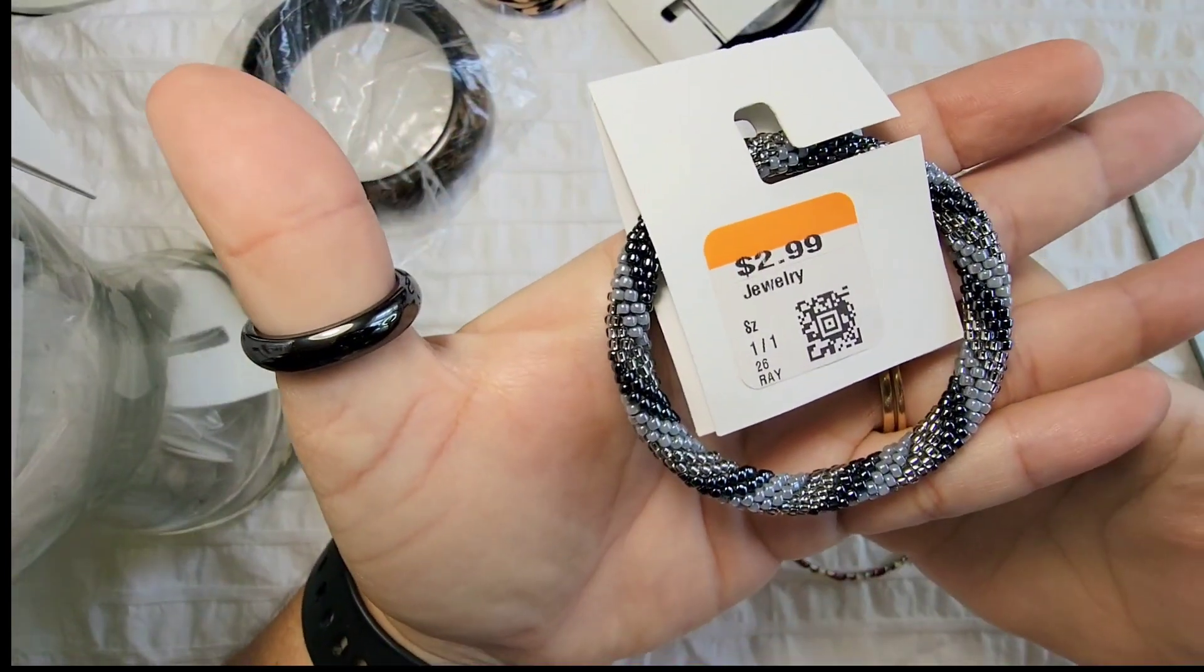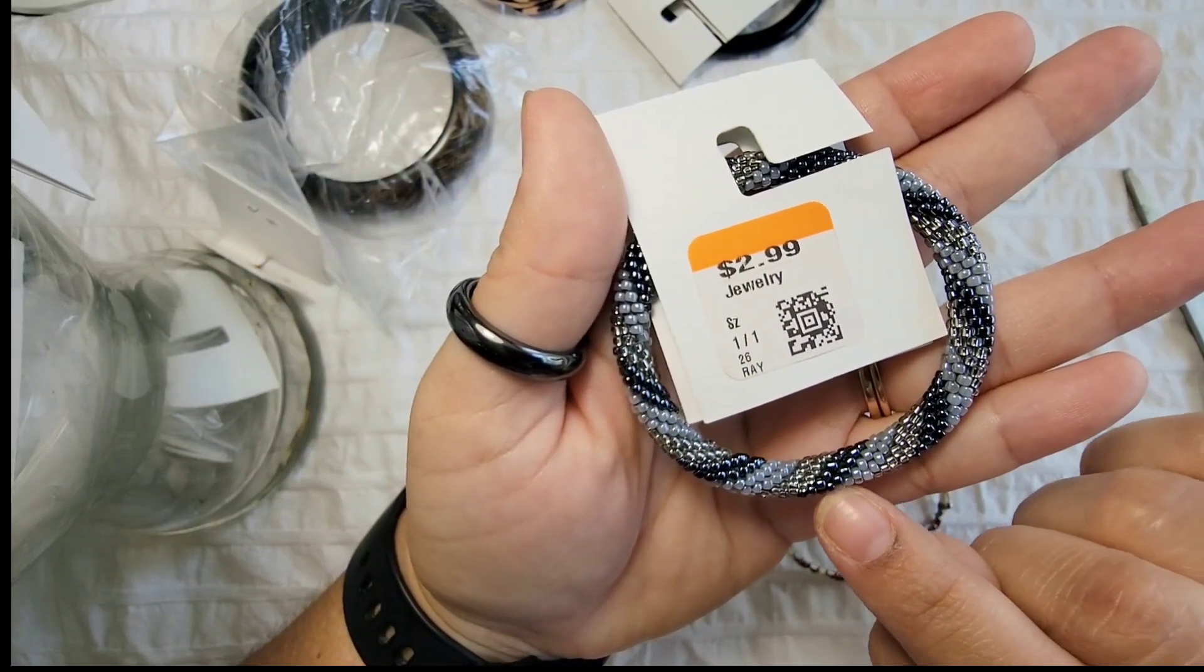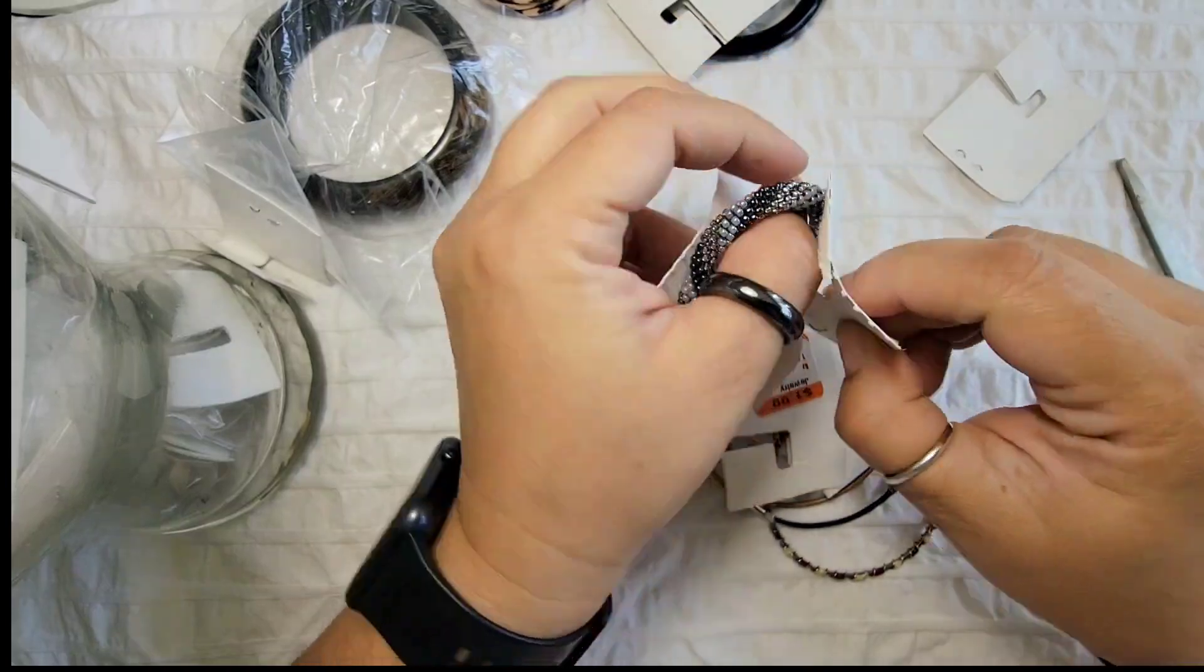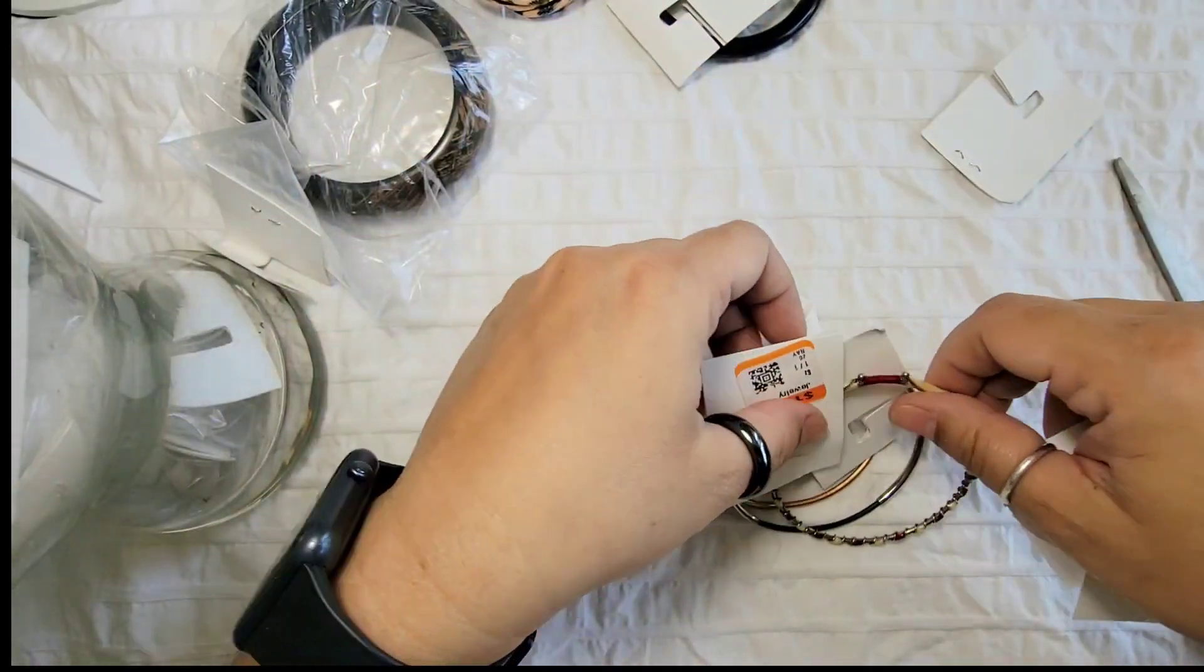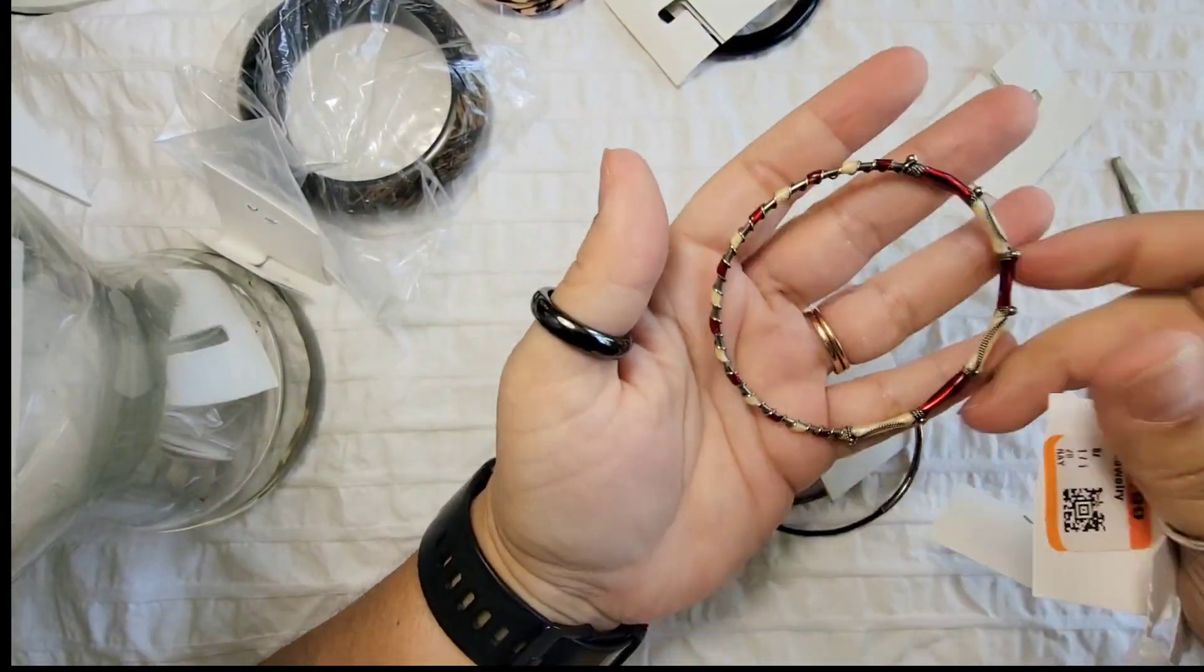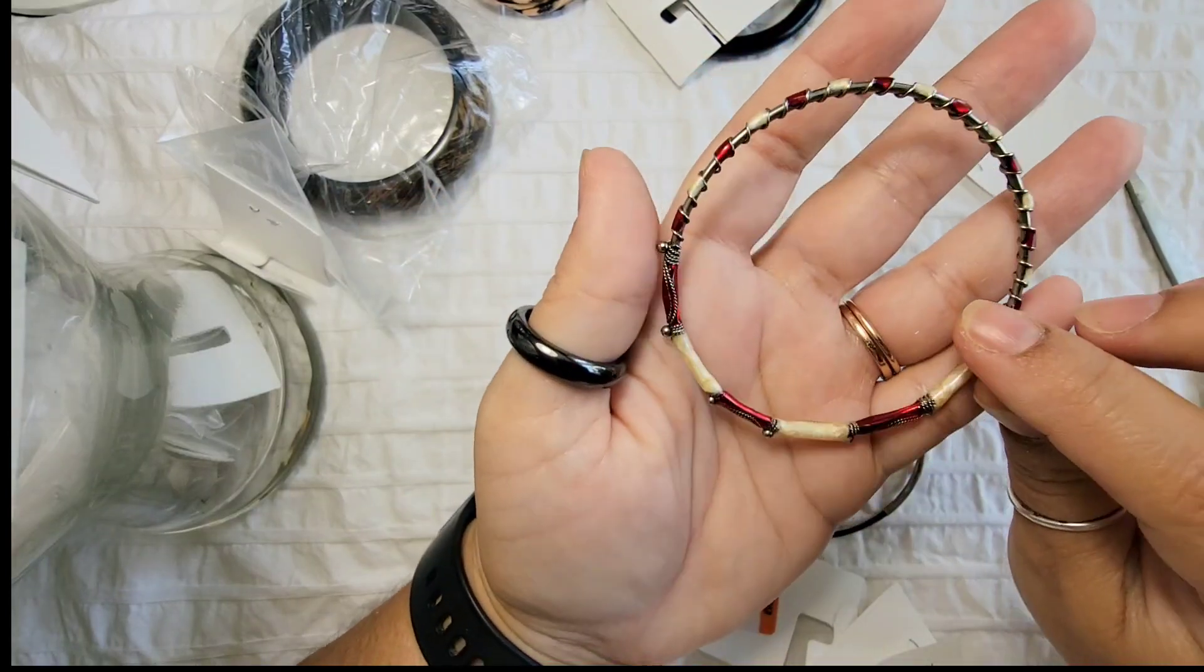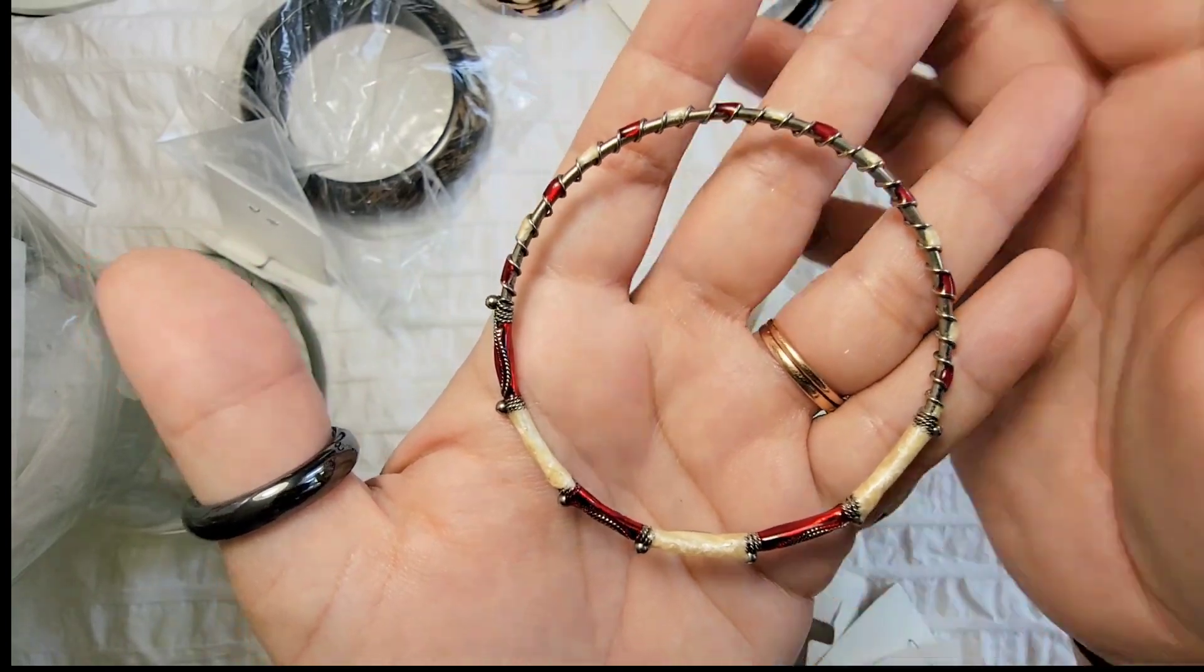This little seed beads bracelet, it's silver tone, onyx kind of tone. They were trying to sell it for $2.99 and it's not stretchy, but it's in really good shape. This is beautiful though. So this is metal on enamel. It's just gorgeous. I do like this one.